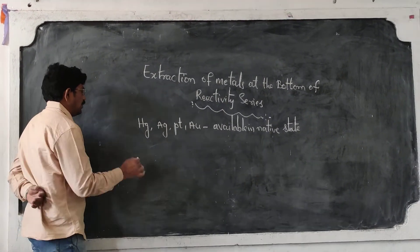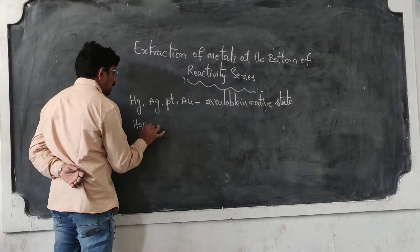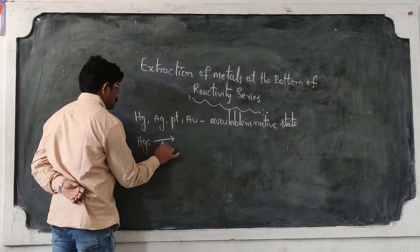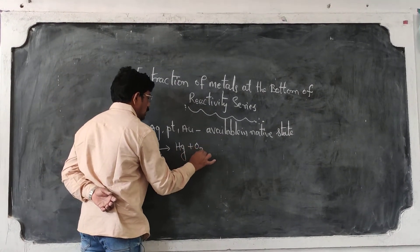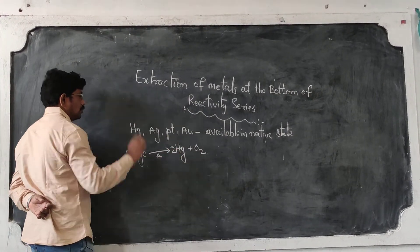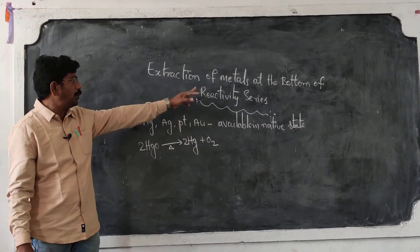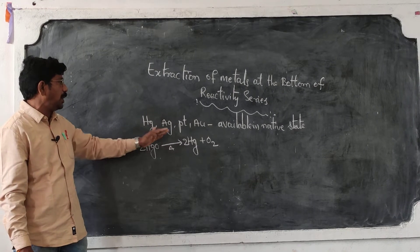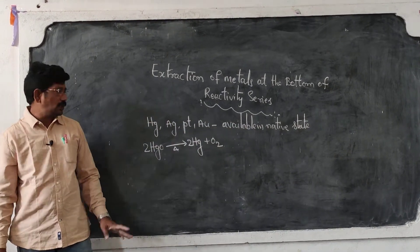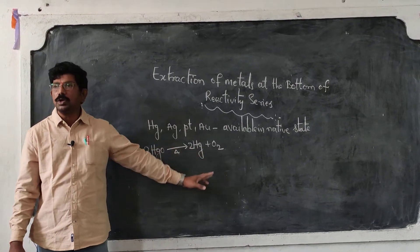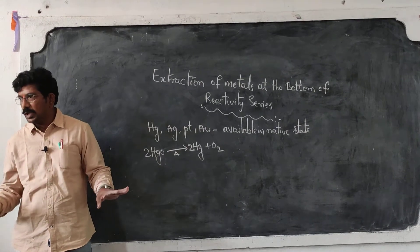For example, take the case of mercury oxide. When you heat mercury oxide, it gives mercury in molten form and oxygen is liberated. So extraction of metals at the bottom of the series: these metals are obtained in molten form on heating their metal oxides. Oxygen is removed, so it is reduction.